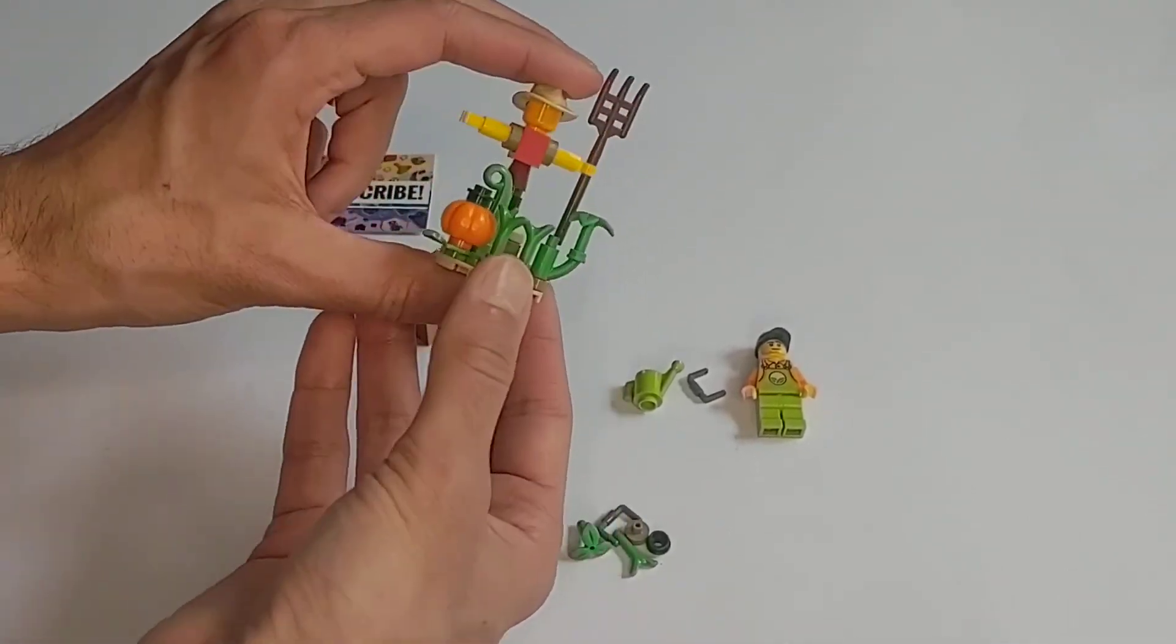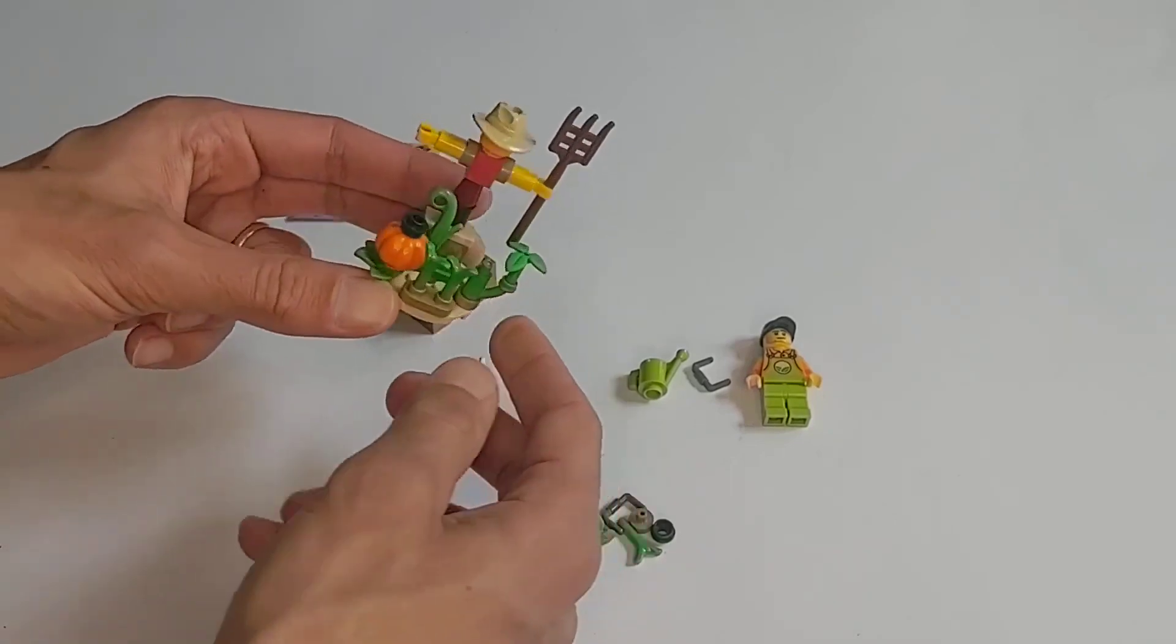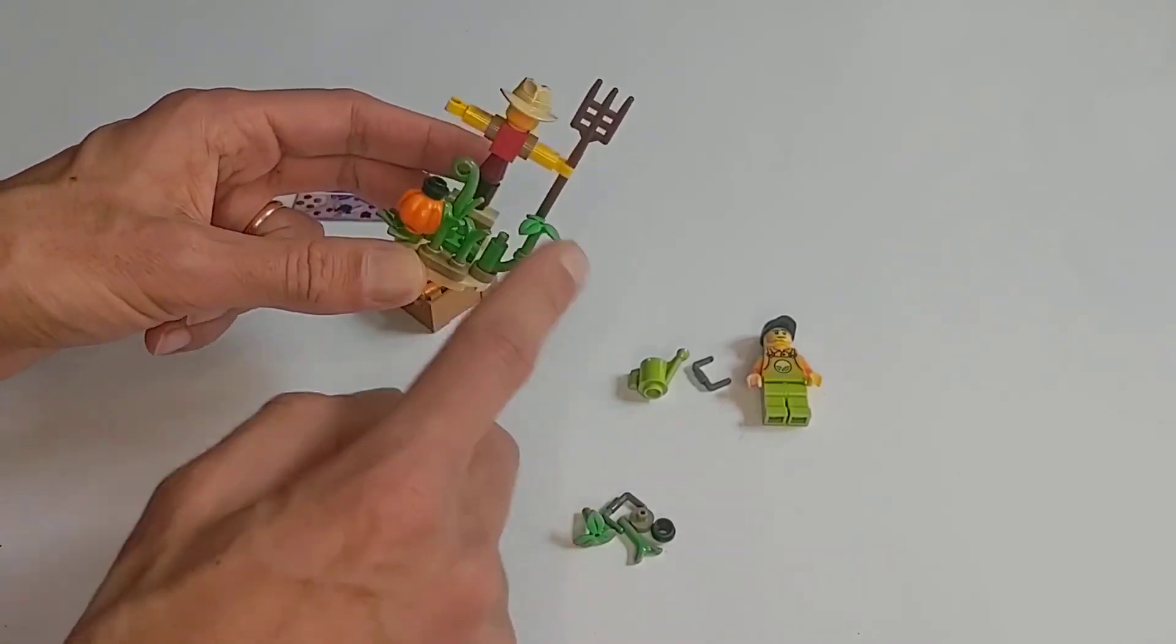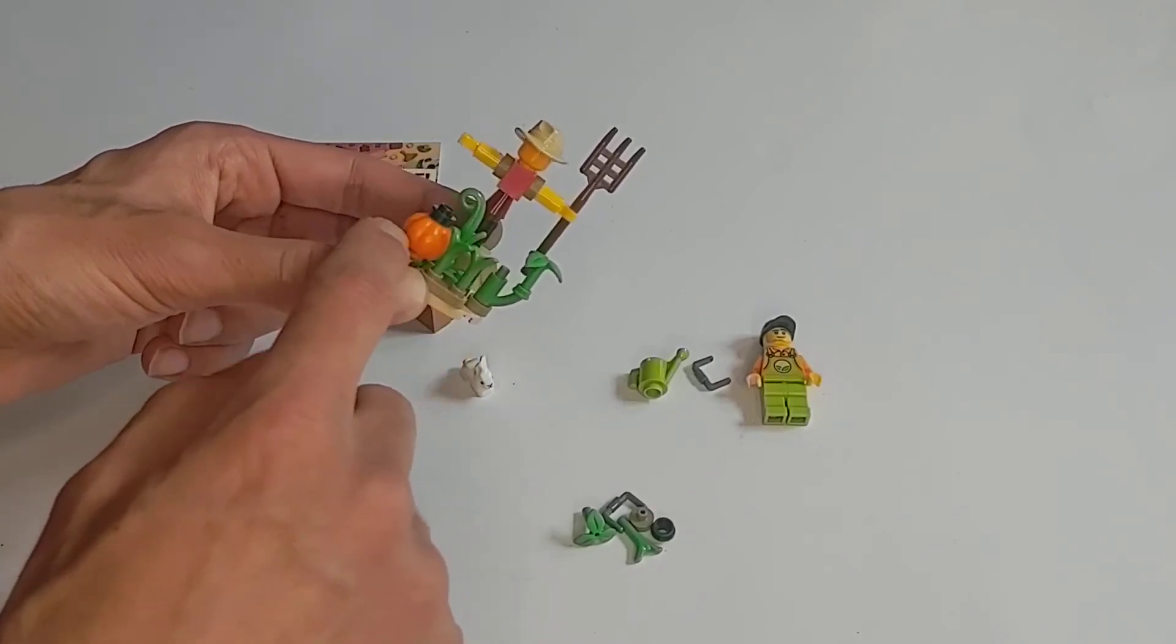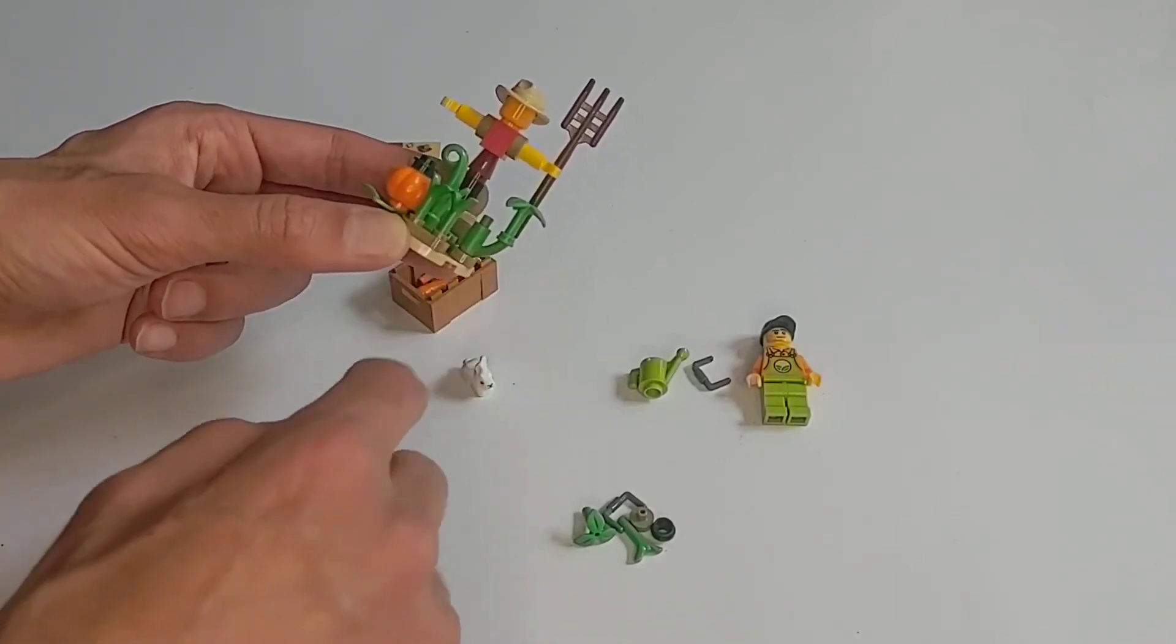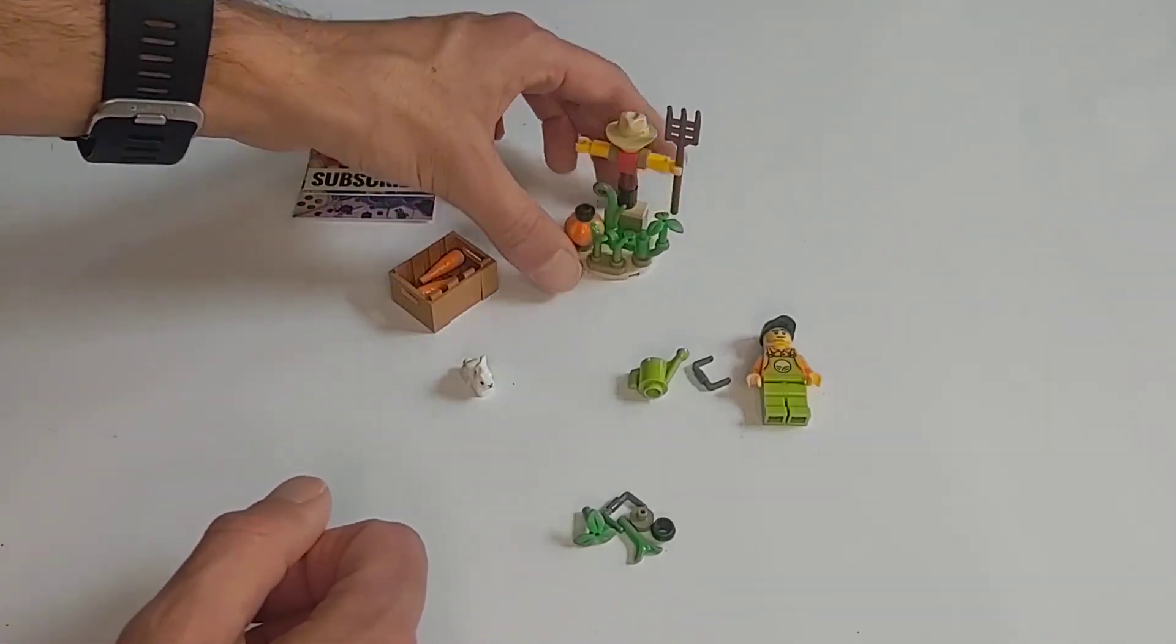Anyway, and here's our main build. It's the Scarecrow. It has a minifigure accessory and an assortment of greens. This is a pumpkin, obviously. I'm not really sure what the rest of these are supposed to be, maybe carrots or something like that.